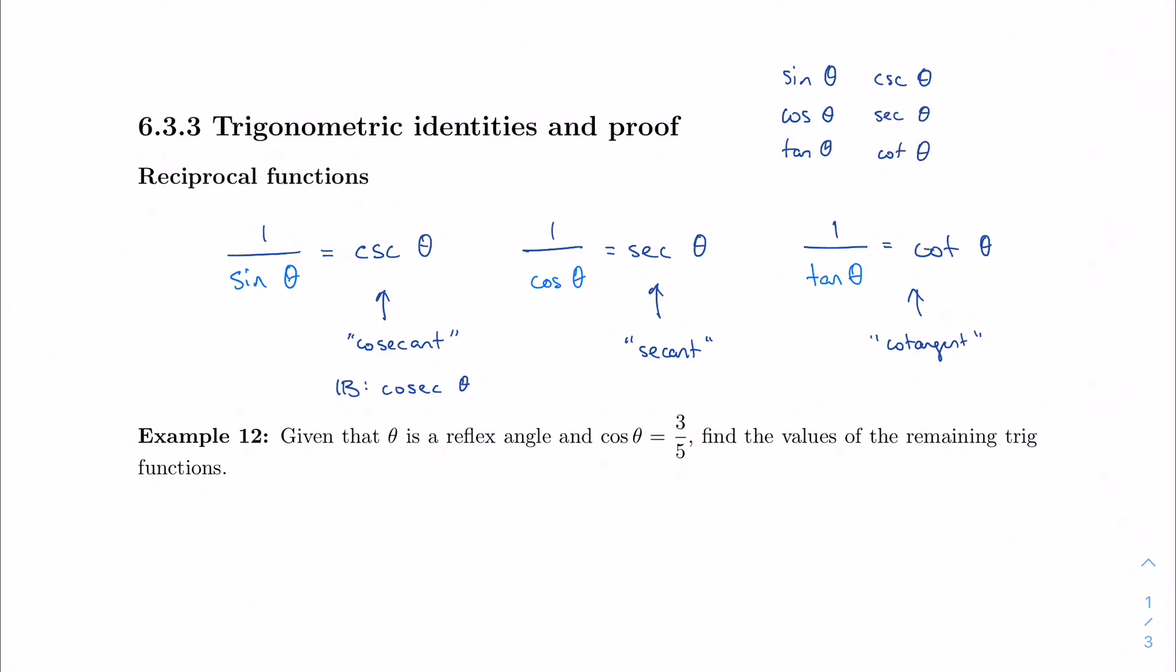And generally, we tend to write them this way, in this kind of 3 by 2 grid, so that we see that relationship between them. We see that reciprocal relationship.